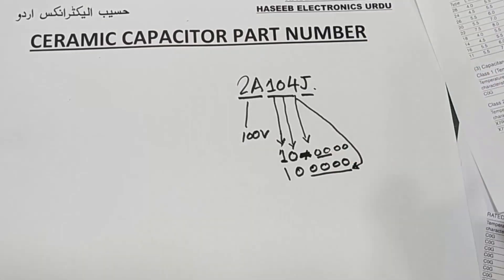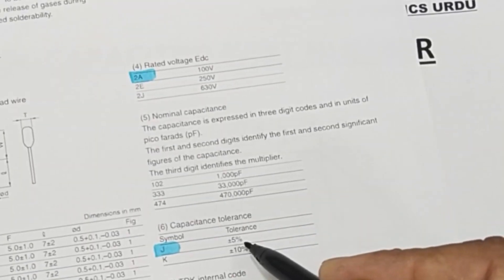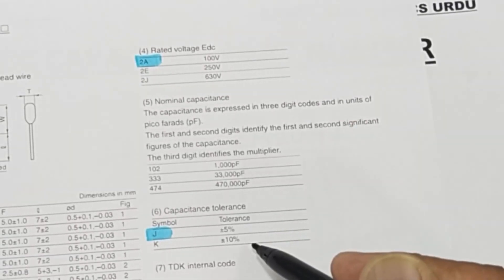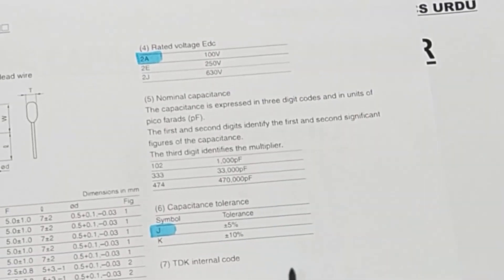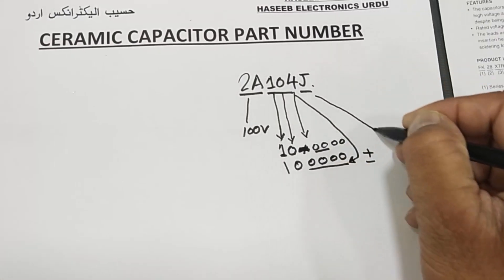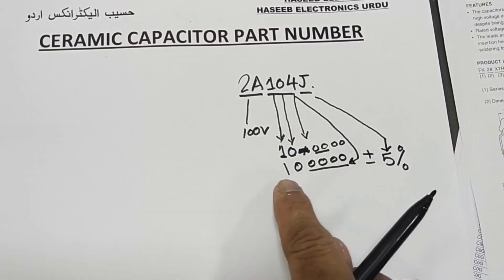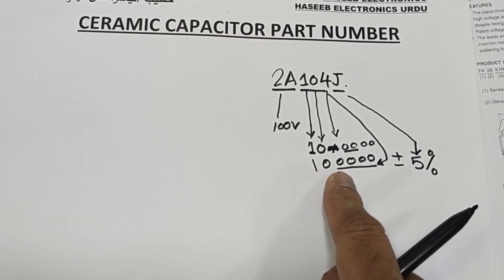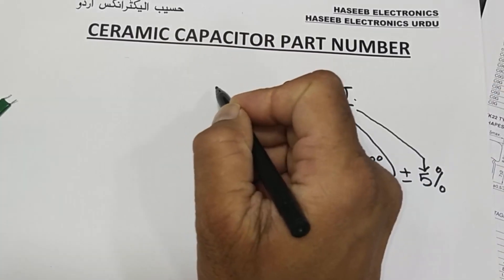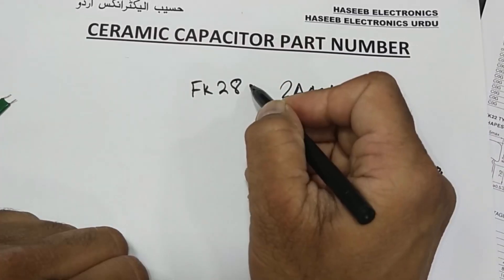The last digit is the tolerance code. J means plus or minus 5%. If it is K, that is plus or minus 10%. In our condition it is J, so plus or minus 5%.